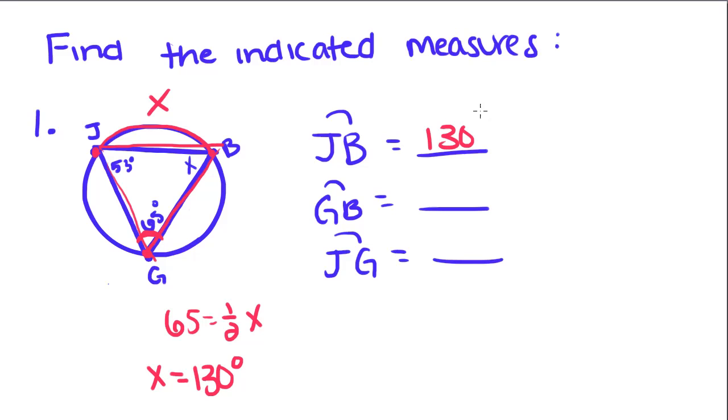So the length of that is 130 degrees. Now they want the measure of arc GB. GB is captured by this angle J, so that means that this length, we're going to call it Y, is twice the size of J. Or, J which is 53 is equal to half the length of this, which is Y.